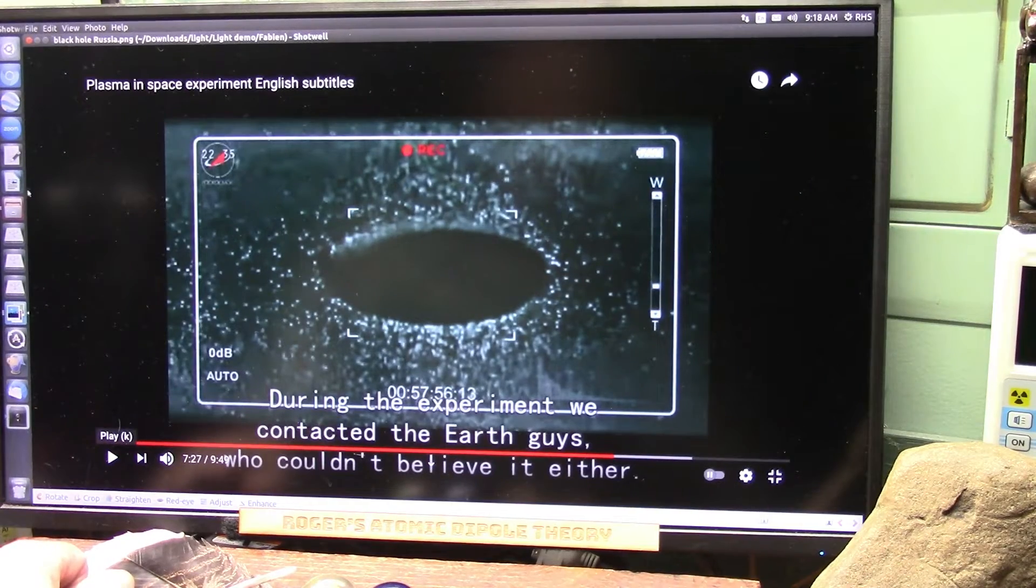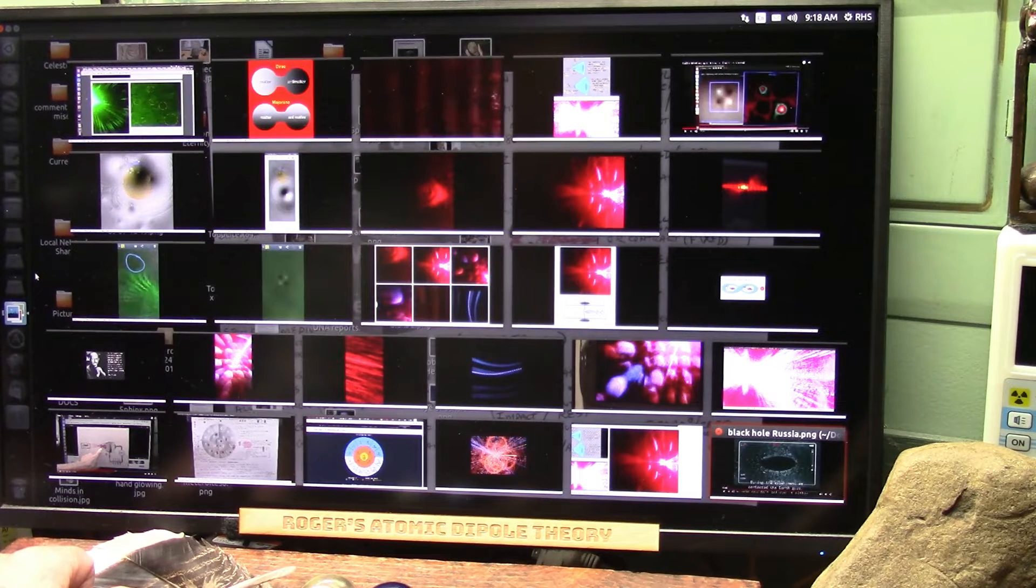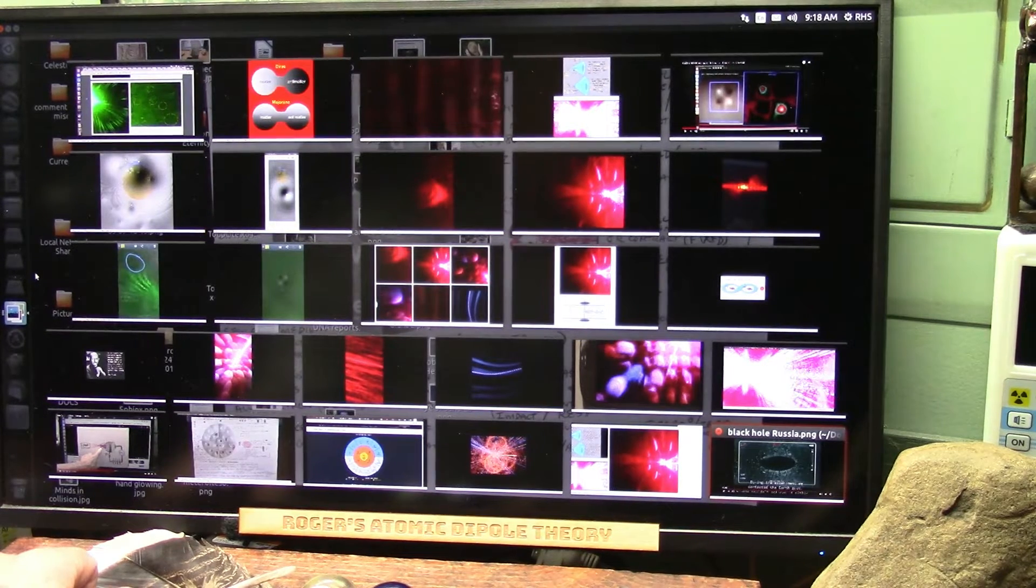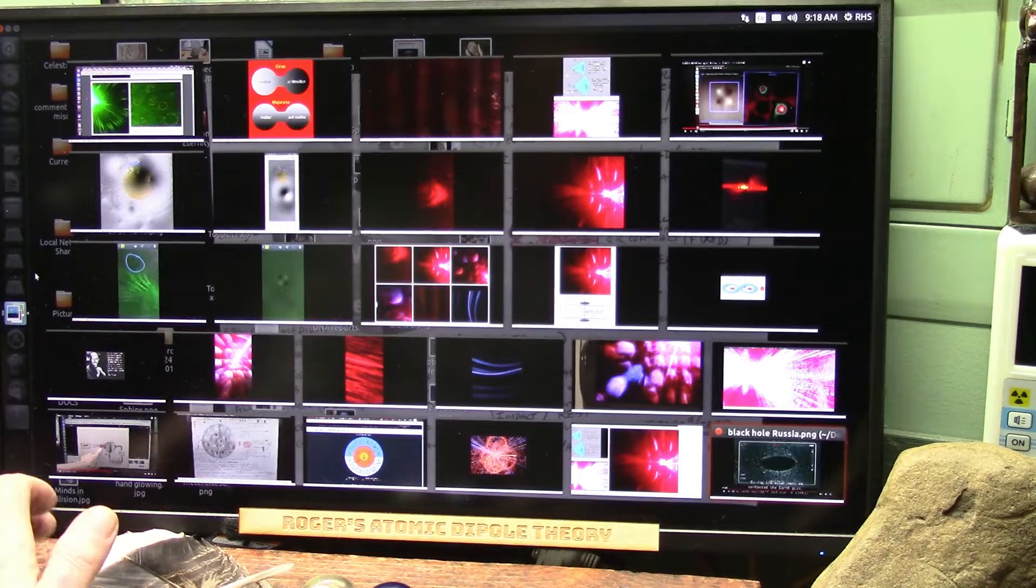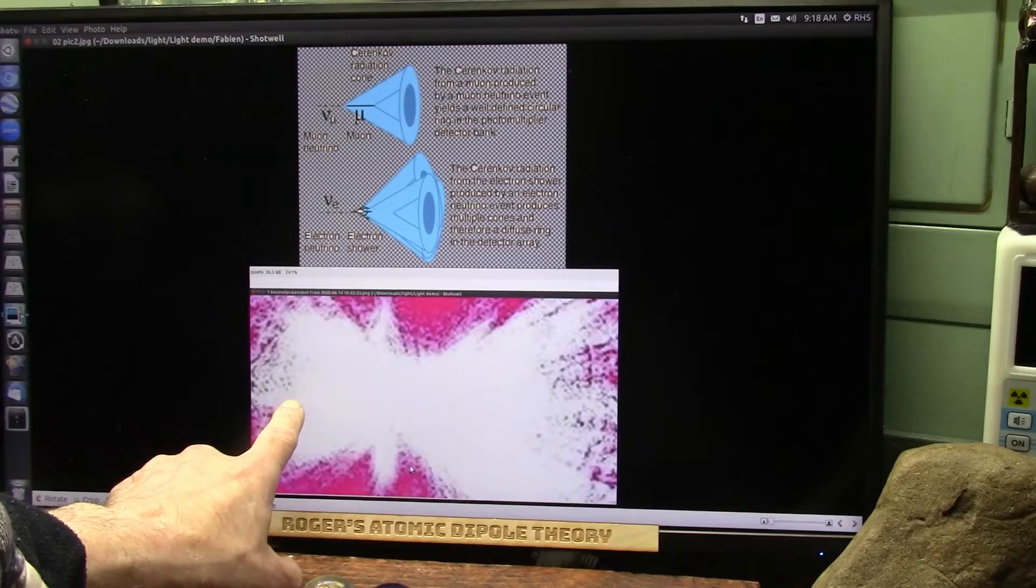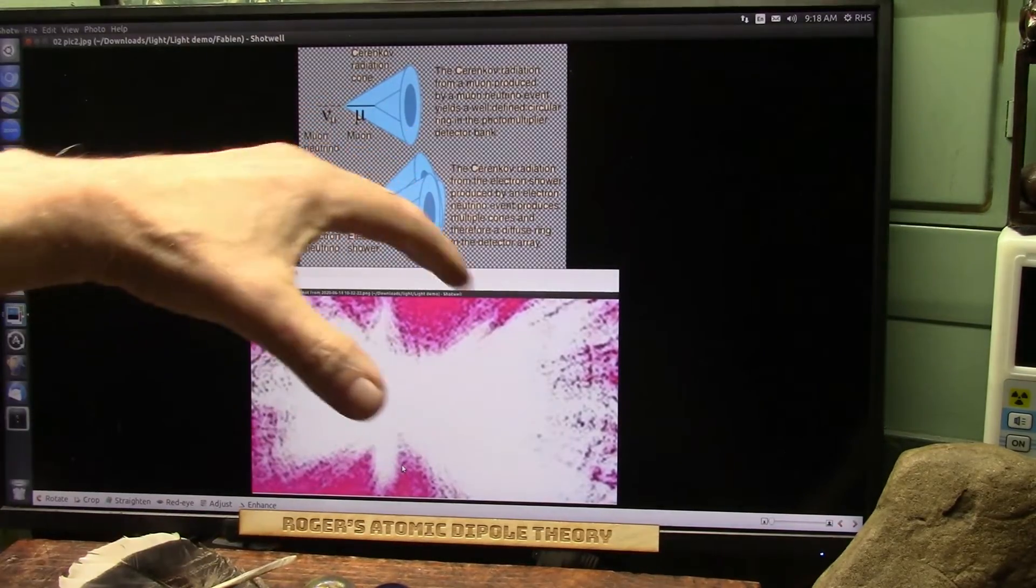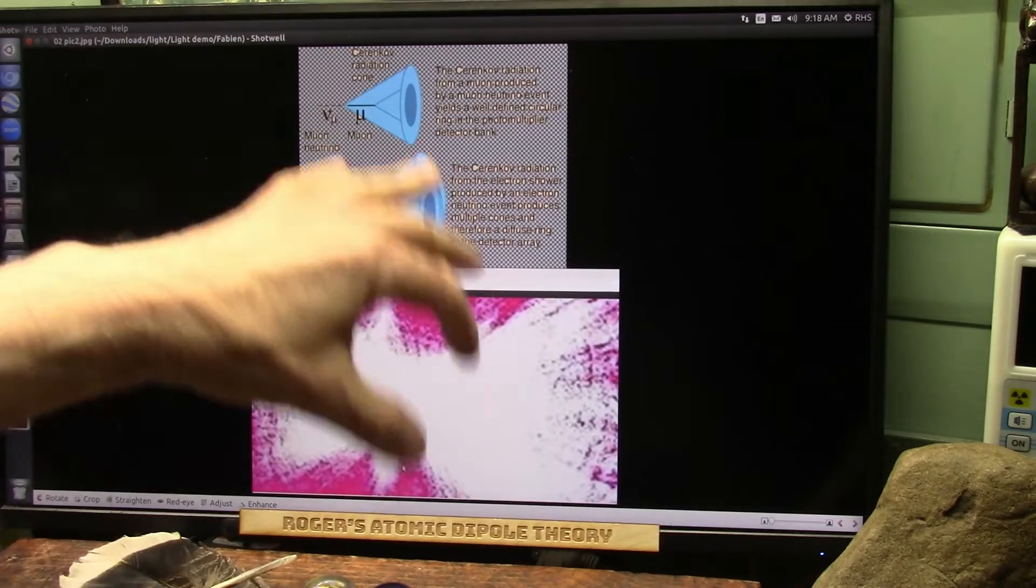They have no clue whatsoever what they're looking at. But once you understand dipole flood, you know that the particles can separate and the black can be separated from the white. Here it is right here. The black and the white separated. In space, they don't snap back together. They sort of drift apart. So all you ever see is the white surrounding the black.